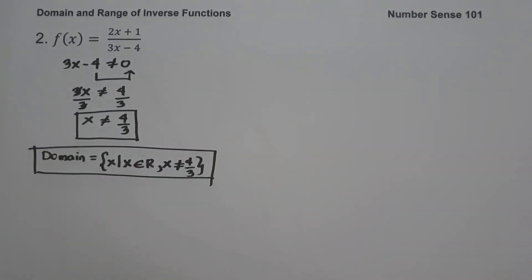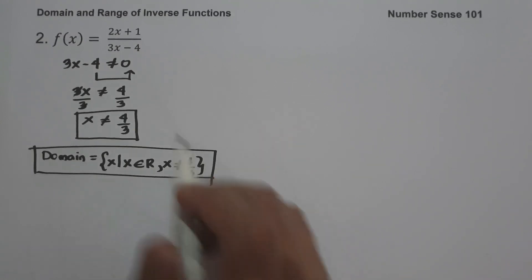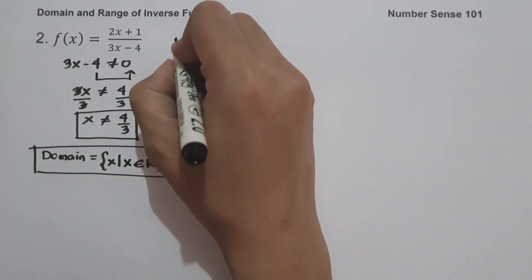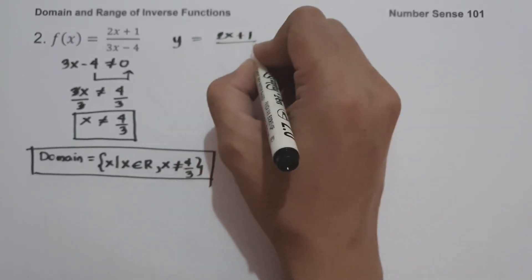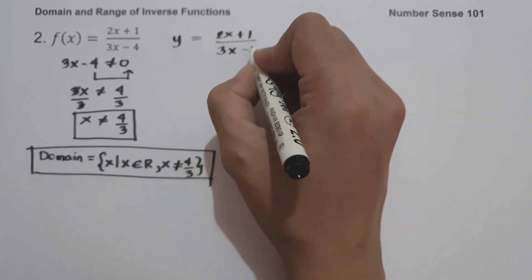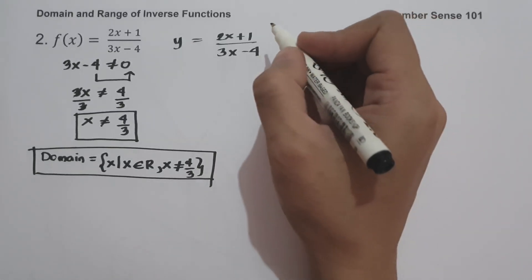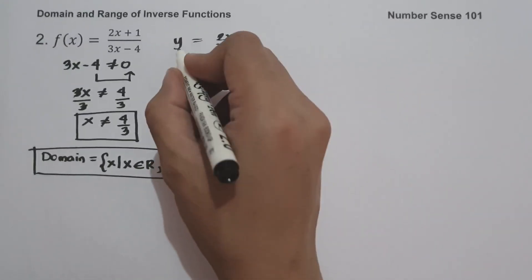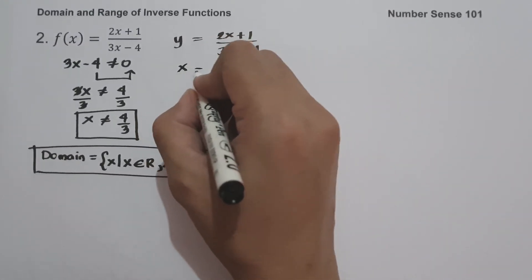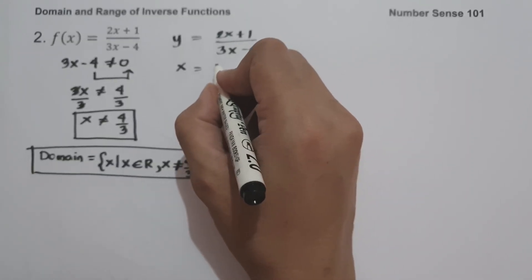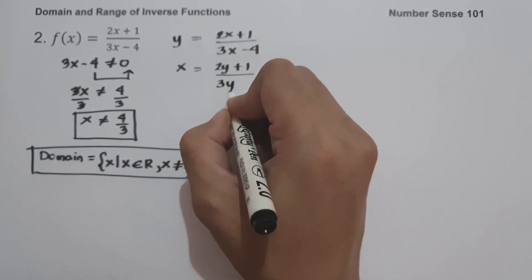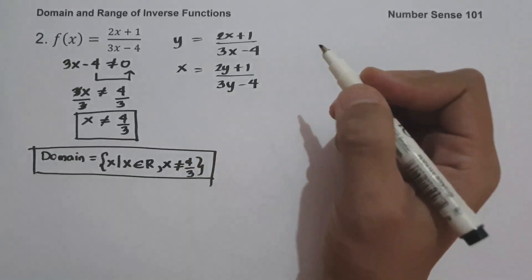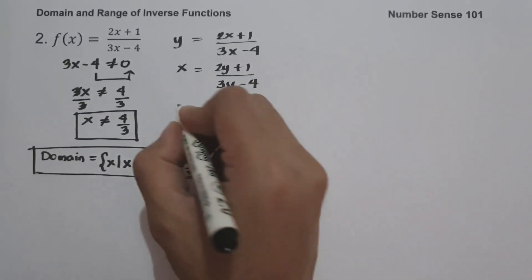To find the range of the given function, let us find first the domain of the inverse function. Writing it as y equals 2x plus 1 all over 3x minus 4 and interchanging x and y variables gives us x equals 2y plus 1 all over 3y minus 4.